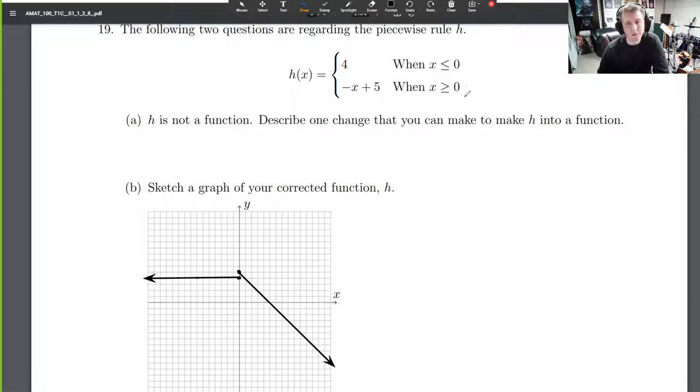The issue here is just the definition of a function. A function, for any input, can only give one output. We had a rule called the vertical line test—a test that said if you can draw a vertical line somewhere and it touches the graph in two places, uh-oh, right there, then you do not have a function.